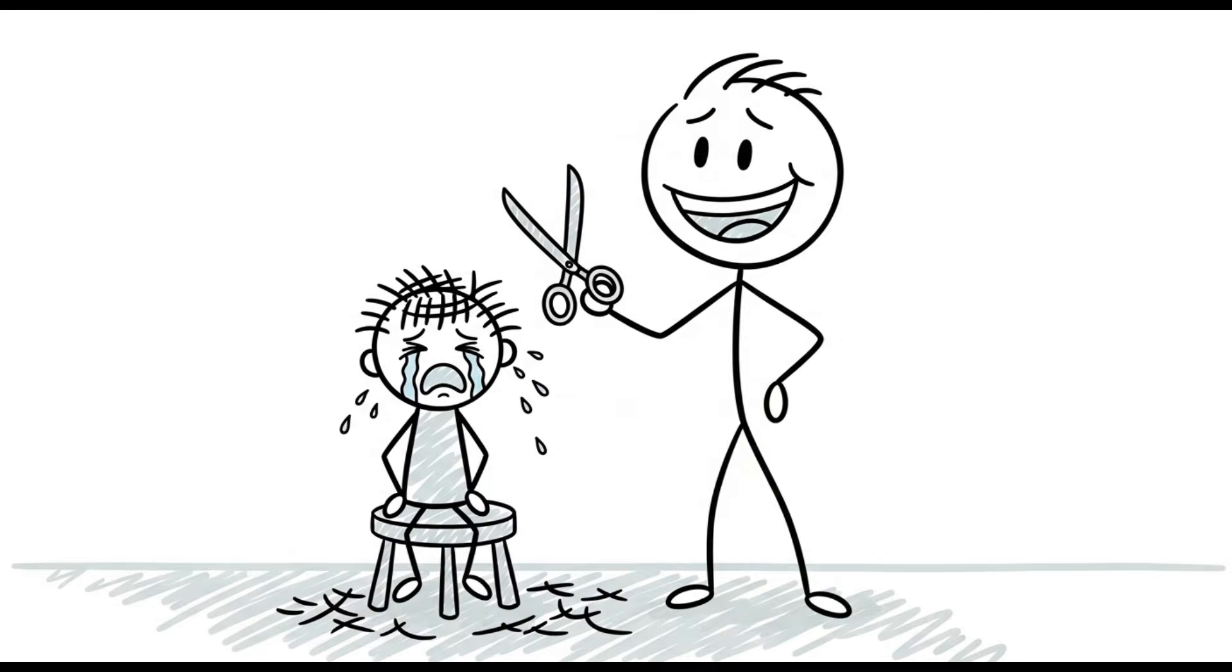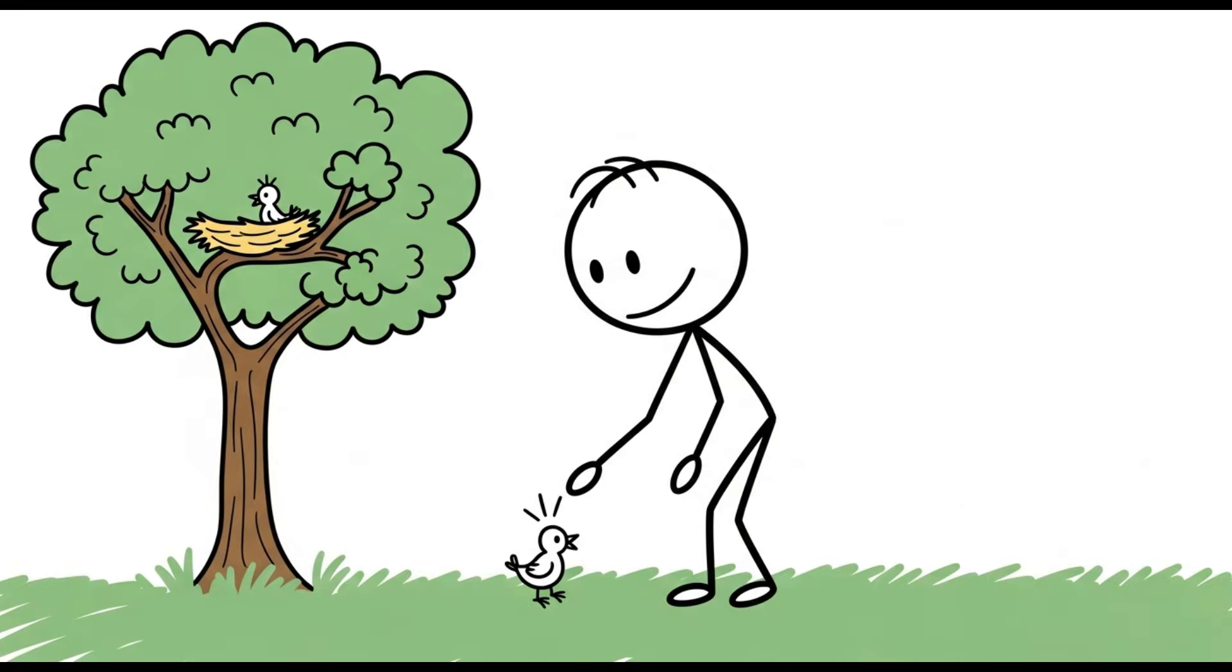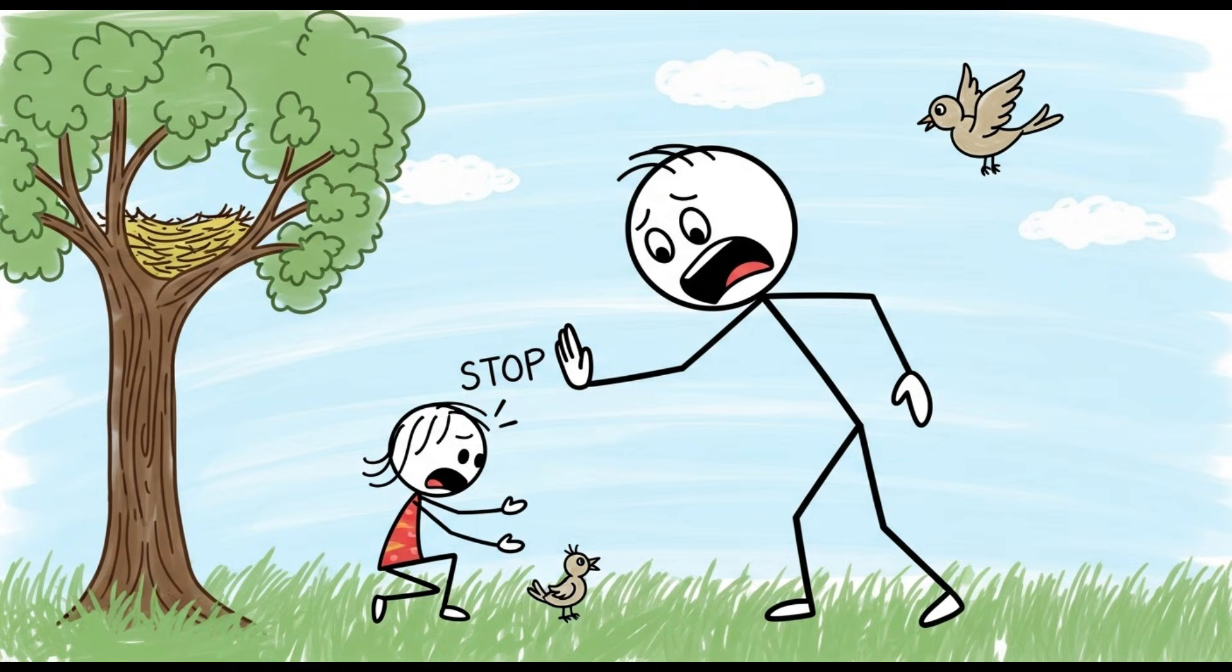This one is a classic piece of childhood trauma delivered with the best of intentions. You find a tiny, helpless baby bird that has fallen out of its nest. Your first instinct is to gently pick it up and place it back where it belongs. But then an adult swoops in, physically and metaphorically, to warn you, don't touch it.